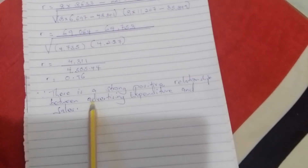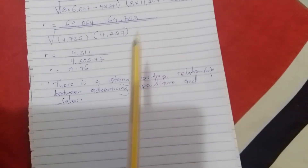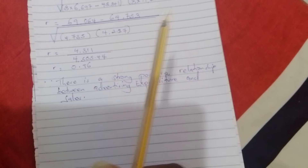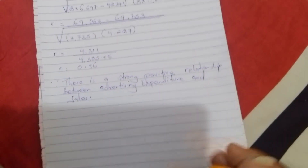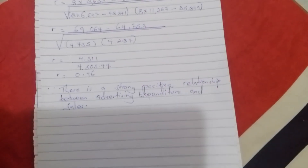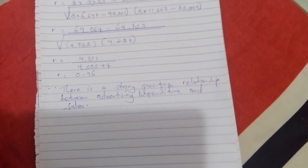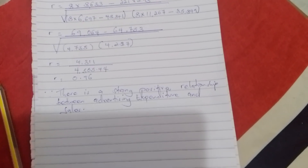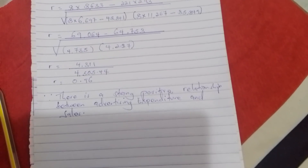That is the relationship between advertising expenditure and sales using Pearson's method. There is a strong positive relationship because the value is positive and high — almost one. Thanks for watching; don't forget to subscribe, like, comment, and share with your friends. See you in the next video.